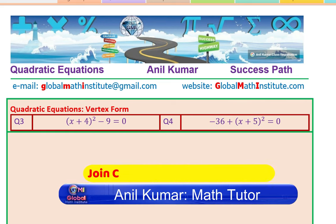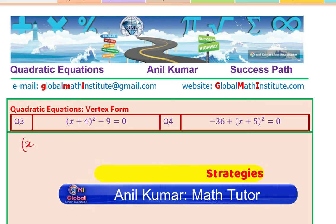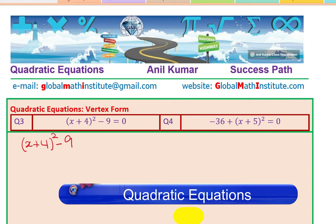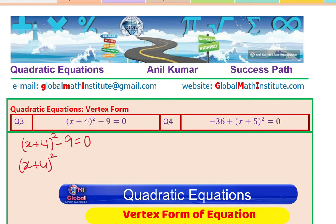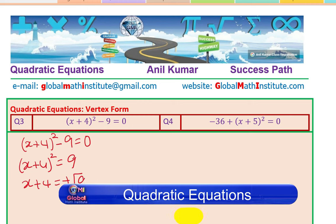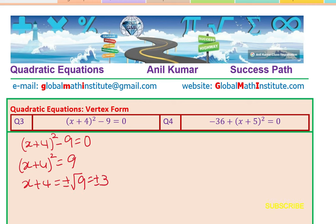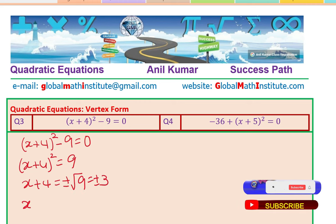Here are two more questions, very similar to what we just did. This one is (x plus 4) whole square minus 9 equals to 0. That means x plus 4 whole square equals 9. Taking the square root of both sides, x plus 4 equals plus or minus square root of 9, which is plus or minus 3. So x equals minus 4 plus or minus 3.